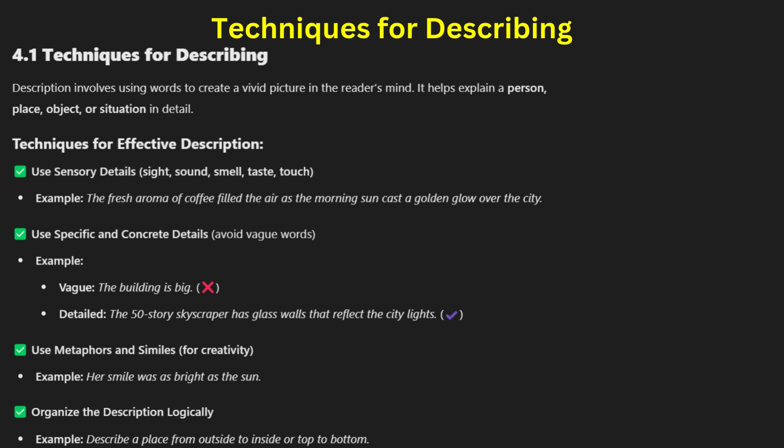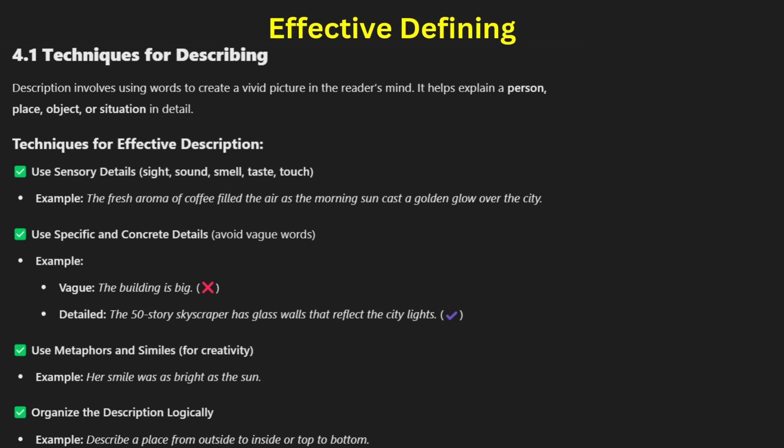Precise description makes the writing more immersive and effective for the reader. Effective defining: a definition explains the meaning of a term or concept in a clear and concise way. There are different ways to define something — formal definitions, operational definitions, and extended definitions. A formal definition: 'an algorithm is a step-by-step process for solving a problem.' Operational definitions explain how something works in context. Extended definitions provide examples, history, and significance.